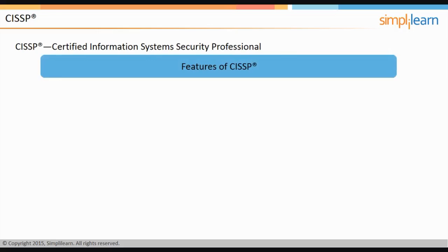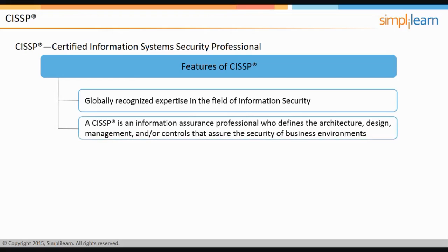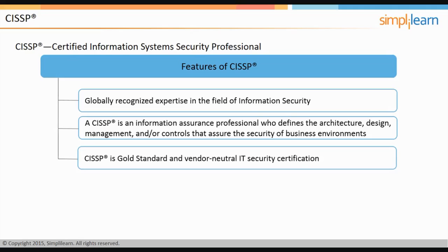You will also be able to identify the various CISSP certification requirements and describe the CISSP exam. CISSP expands to Certified Information Systems Security Professional. It is the first certification in information security which is globally recognized. A CISSP is an information assurance professional who has demonstrated a globally recognized level of competence, defining the architecture, design, management, risk, and controls that assure the security of business environments. CISSP is a gold standard and vendor-neutral IT security certification.